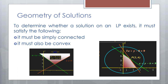To determine whether a solution to a linear program exists, it must satisfy two conditions. First, it must be simply connected — the corner points must form an enclosed region. An unbounded solution set extending to infinity cannot be enclosed, so it is not simply connected. In the second example, the feasible region's corner points, when connected, form a connected shape — so the first condition is satisfied. The second condition is that the region must be convex.